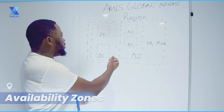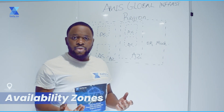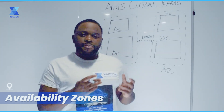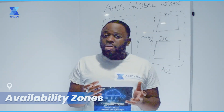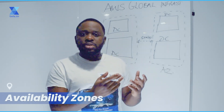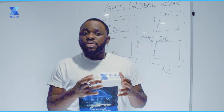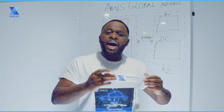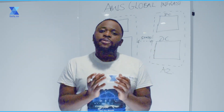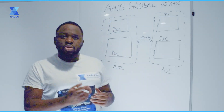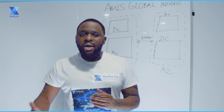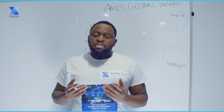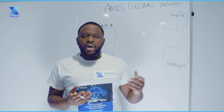In every availability zone, you're going to find two or more data centers. Each availability zone is at least 15 miles from the other availability zone. Remember, an availability zone is just a logical concept — the most important thing is that in a region, data centers are logically grouped to form an availability zone. In every region, you're going to have two or more availability zones. Remember, AWS regions are actually found in different parts of the world.